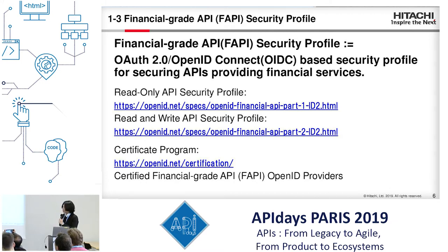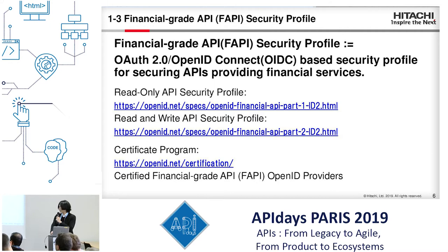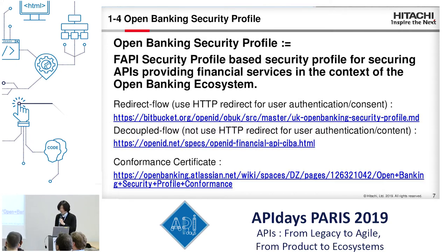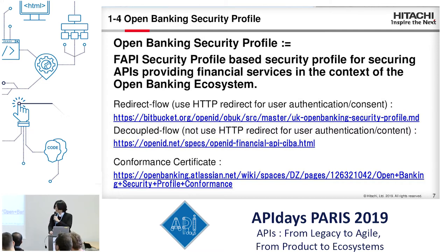The FAPI security profile mainly consists of two parts: the read-only API security profile and the read-and-write API security profile, with a third state program as well. The other profile is the Open Banking security profile. It is a FAPI-based security profile and consists mainly of two parts: the redirect flow and the decoupled flow. There is also a conformance test suite for the Open Banking security profile.